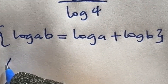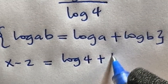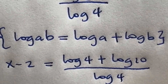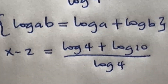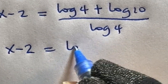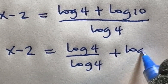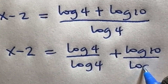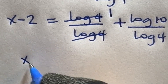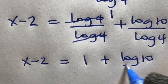So x minus 2 is equal to log 4 plus log 10, all divided by log 4. Separating this division gives us x minus 2 is equal to log 4 divided by log 4 plus log 10 divided by log 4, which simplifies to x minus 2 is equal to 1 plus log 10 divided by log 4.